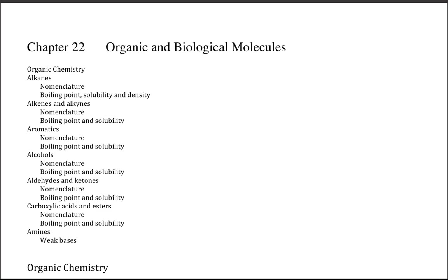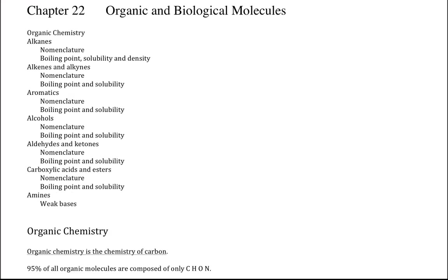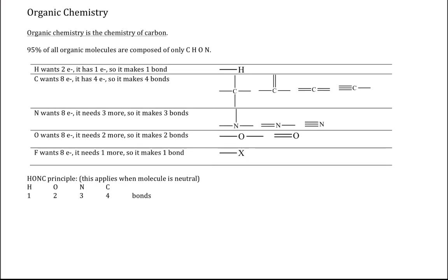And then we have the amines, and we will see that they are weak bases. Organic chemistry is the chemistry of carbon. 95% of all organic molecules are composed of only carbon, hydrogen, oxygen and nitrogen. We can also have in organic molecules sulfur, phosphorus, halogens, and a few other elements, but primarily they are composed of carbon, hydrogen, oxygen and nitrogen. So we'll focus on those four elements.